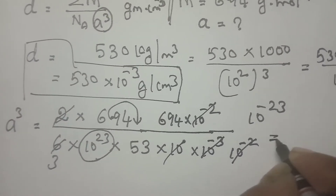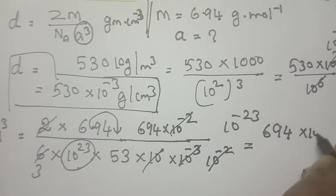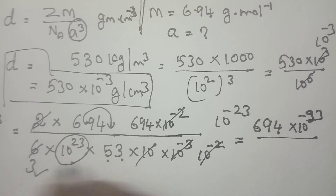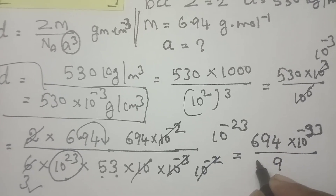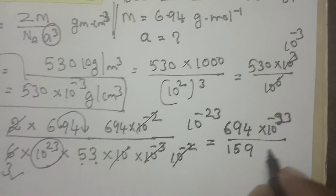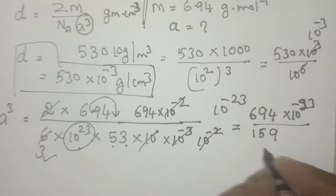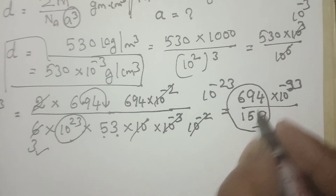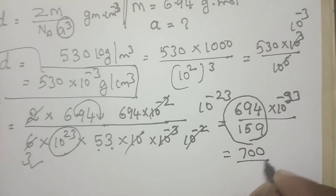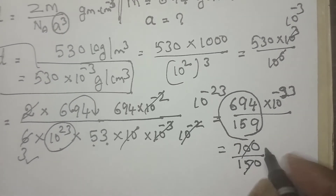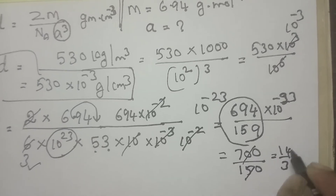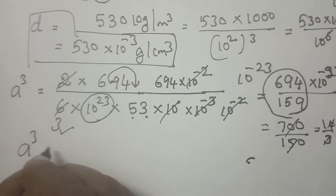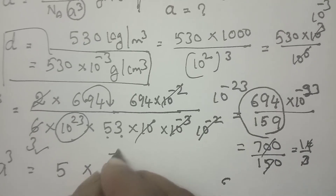Now everything is ready. What is left is 6.94×10⁻²³ divided by (3×530). Multiply 3×530 gives approximately 1590, roughly 150 for approximation. Using 6.94≈700×10⁻²³ divided by 150: 700÷150 ≈ 14/3 ≈ 5. So A³ is approximately 5×10⁻²³.